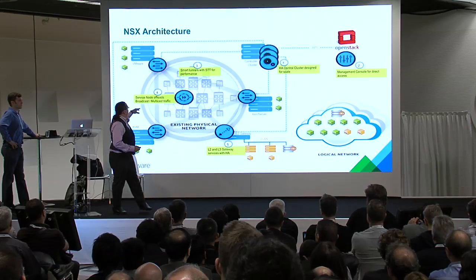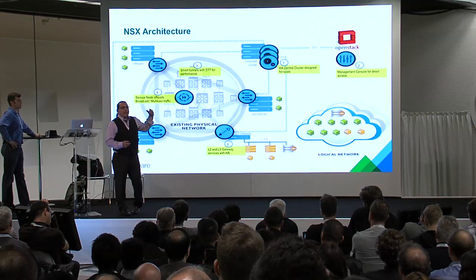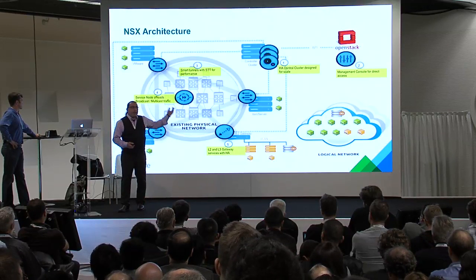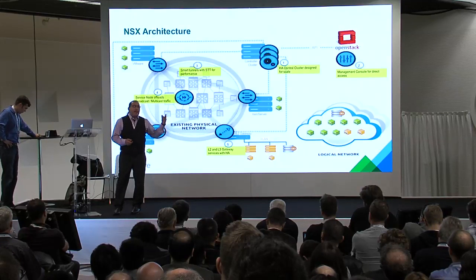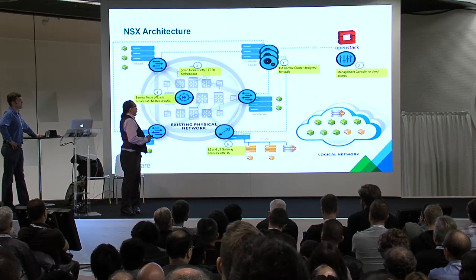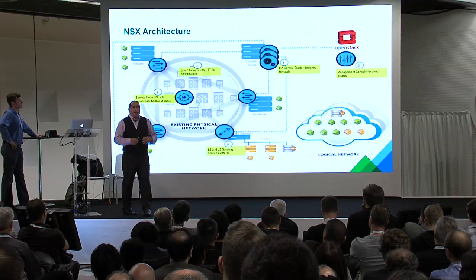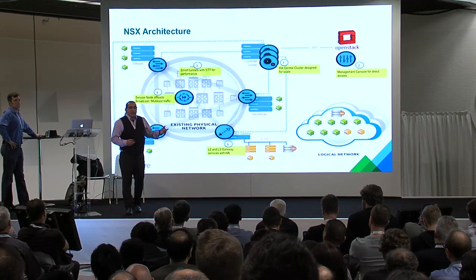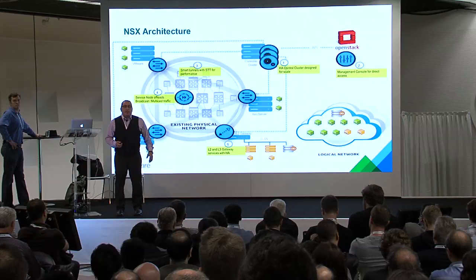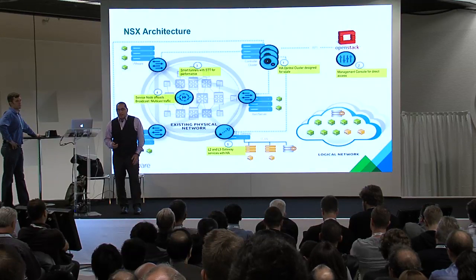The second thing is smart tunnels. We have the ability to do additional encapsulation methods — STT to increase performance between hypervisors and get near-wire-speed performance, as well as VXLAN and next-generation encapsulation technology. We also address issues with VXLAN broadcast and multicast traffic through a service node that allows us to replicate packets in the environment, so each hypervisor node is not dealing with specific broadcast or multicast traffic. Those get offloaded to another node that does the replication smartly — it's a fully resource-scalable solution.